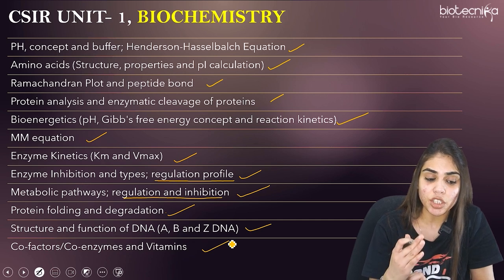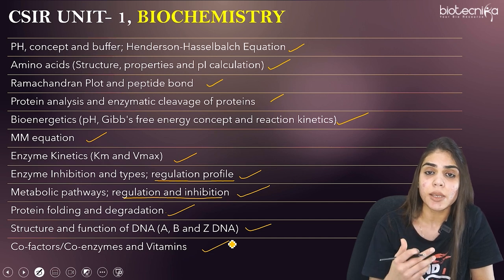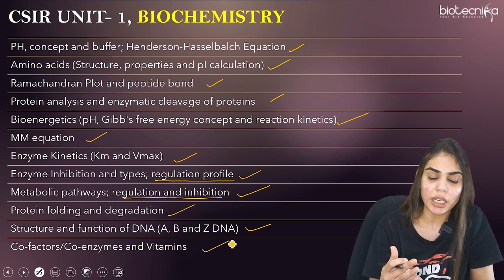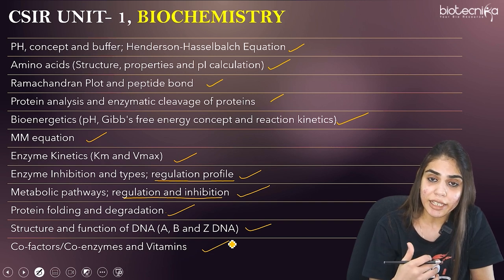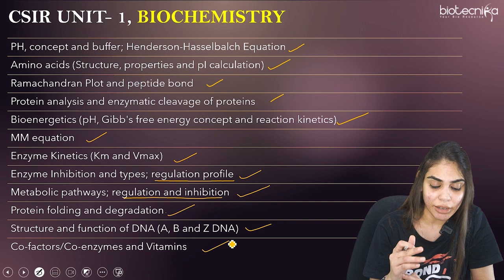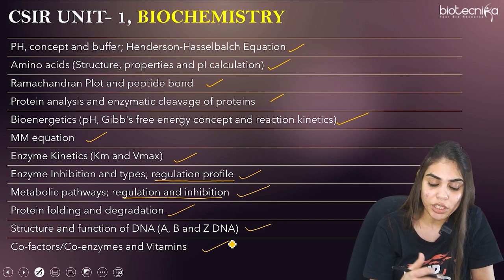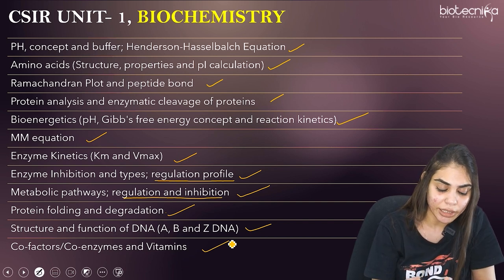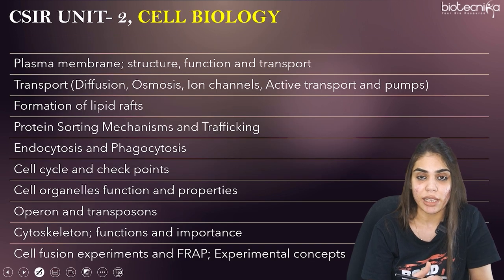To summarize biochemistry: cover pH concept, amino acids, proteins, Ramachandran plot, enzyme kinetics, MM kinetics, LB plot, Eadie-Hofstee plot, everything about the MM equation and its regulation, how to calculate enzyme activity, metabolic pathways, protein folding and degradation, structure of DNA, as well as co-factors and coenzymes.